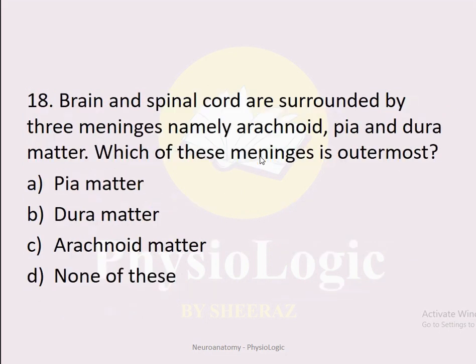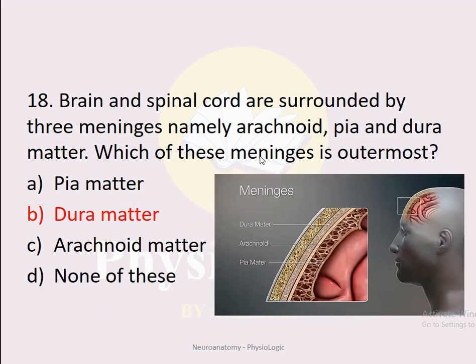MCQ number eighteen: Brain and spinal cord are surrounded by three meninges — arachnoid, pia, and dura mater. Which is the outermost? Option A: pia mater. Option B: dura mater. Option C: arachnoid mater. Option D: none of these. The correct option is B: dura mater. Below dura mater is arachnoid mater, and the innermost meninges is pia mater.